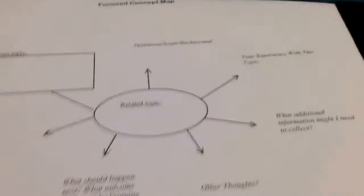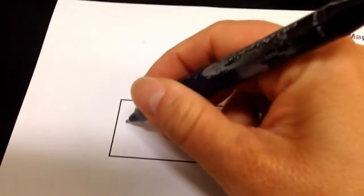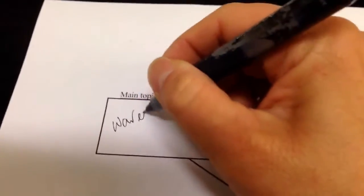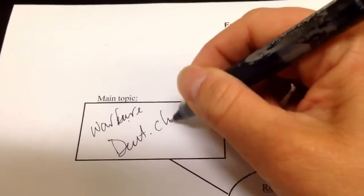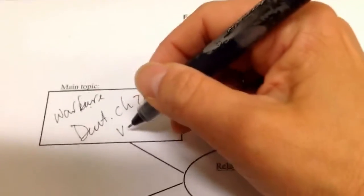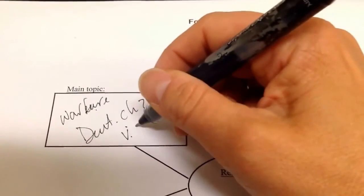So I might come in here and take this more detailed concept mapping strategy, focused concept mapping. So my main topic is still warfare in Deuteronomy chapter 20. And now I'm kind of looking at verses 19 and 20.